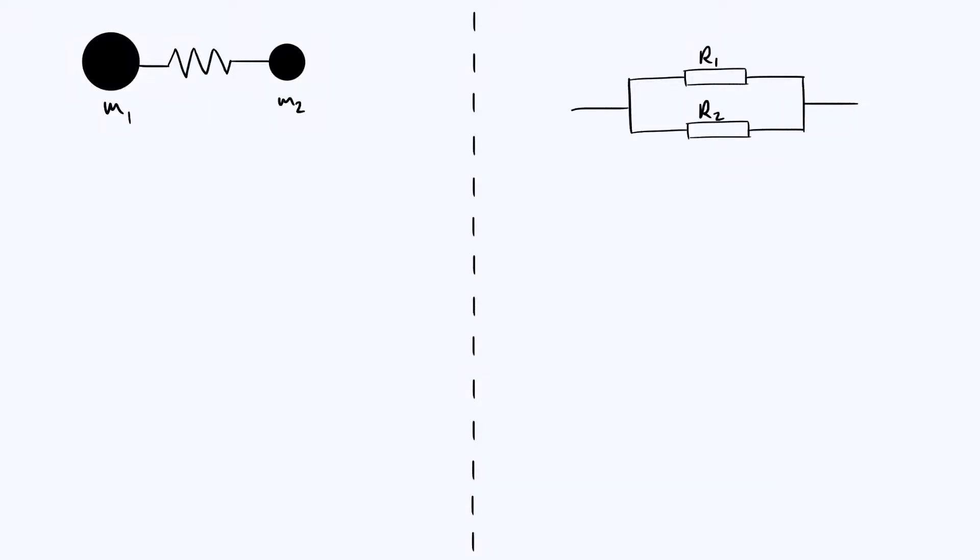Hi everyone, in this video I wanted to discuss a certain similarity that I recently noticed between two particular distinct physical systems. The two systems I'm focusing on are this one on the left, which is just a spring with two different masses, one connected to each end of the spring, and secondly the system on the right, which is just two different resistors connected to each other in parallel.